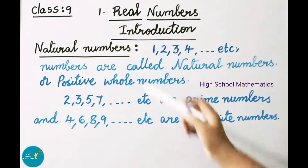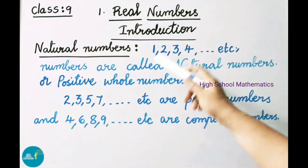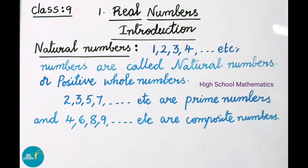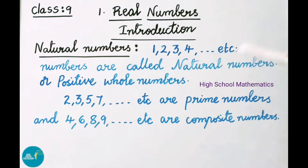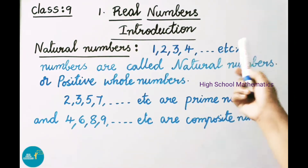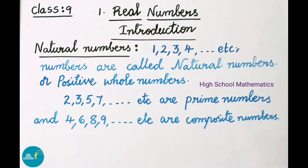See here natural numbers: 1, 2, 3, 4, and so on. These numbers are called as natural numbers. We denote natural numbers with the letter capital N. These numbers are also called as positive whole numbers.